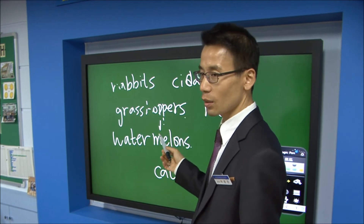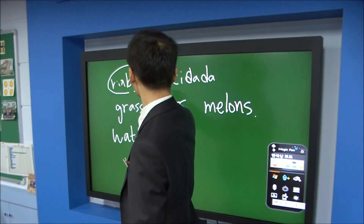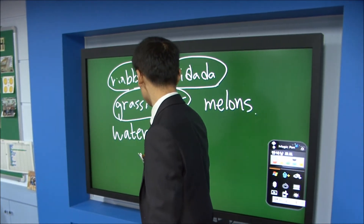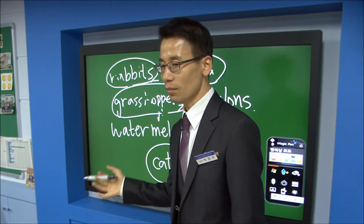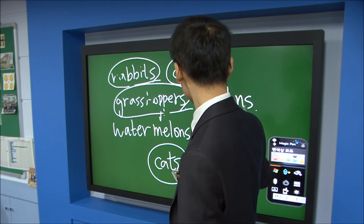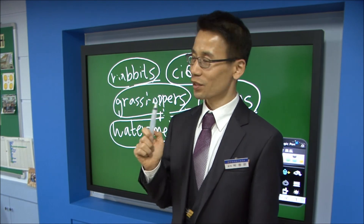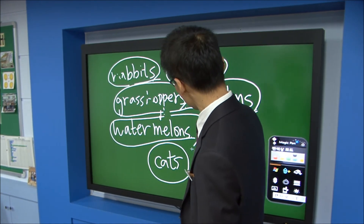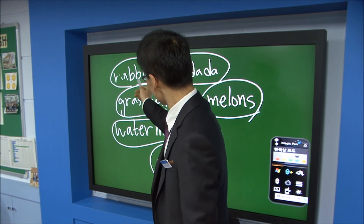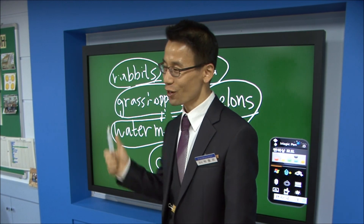Good job! Which ones are animals? Rabbit, cicada, grasshoppers, and cat — good. What are the plants? Melons and watermelons — good job! So today we will study about these animals and plants.